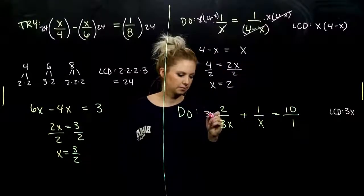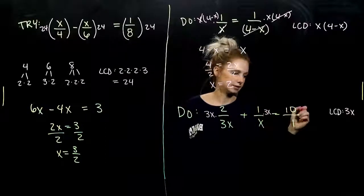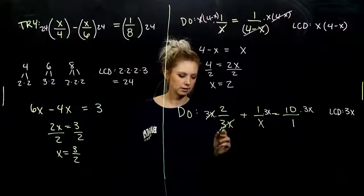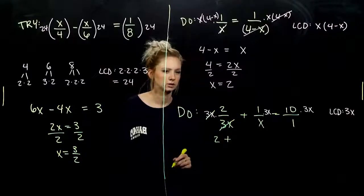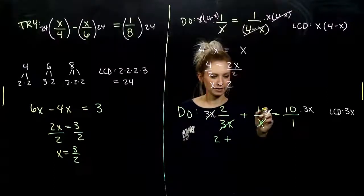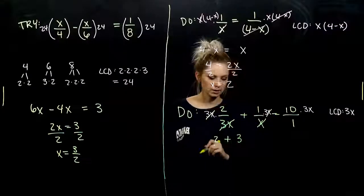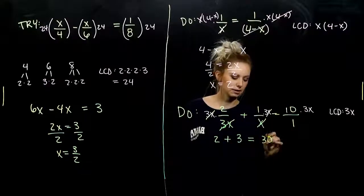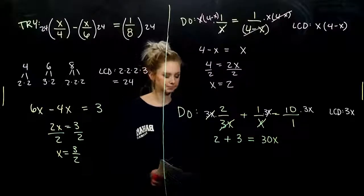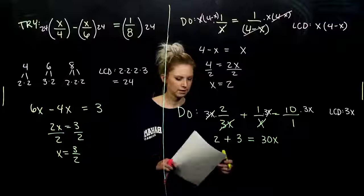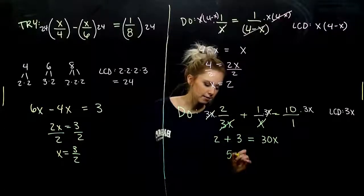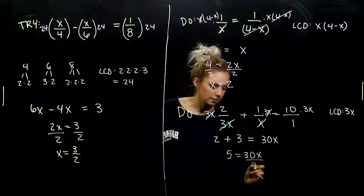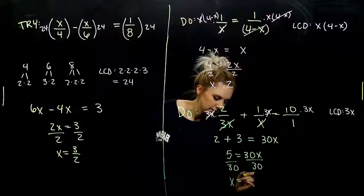So again, every single term times 3x. Let's see what we get coming out. 3x divided by 3x, gone. I'm left with 2. And x divided by x will go away, but I've got 3 times 1, so I'm adding 3 to that. And what does that equal to? 3 times 10 will give me 30, and x is still living up in the numerator. Which is good. We need it to live up in the numerator. And we can combine these like terms. I've got 5 constants equaling 30x. How do we solve for x? Divide by 30.